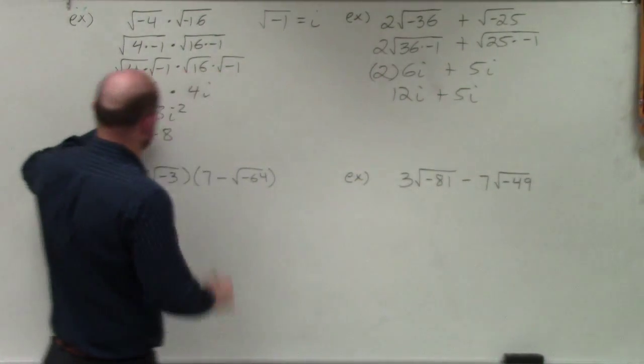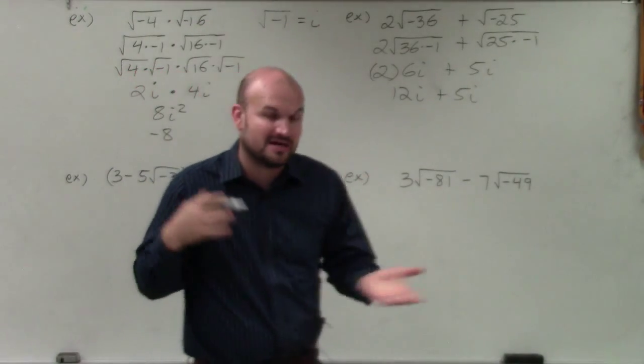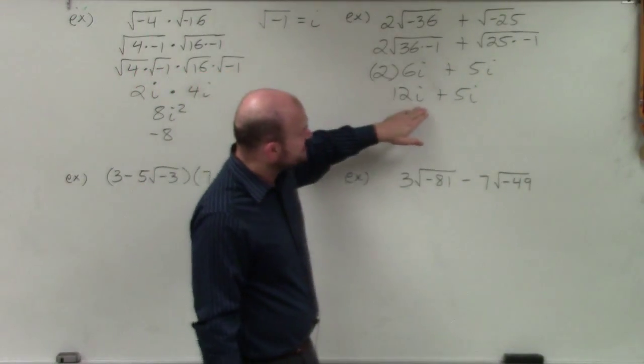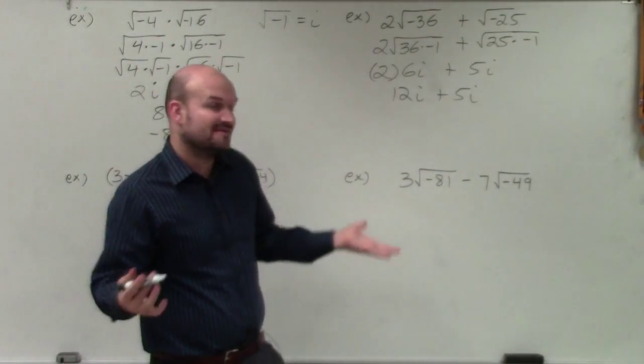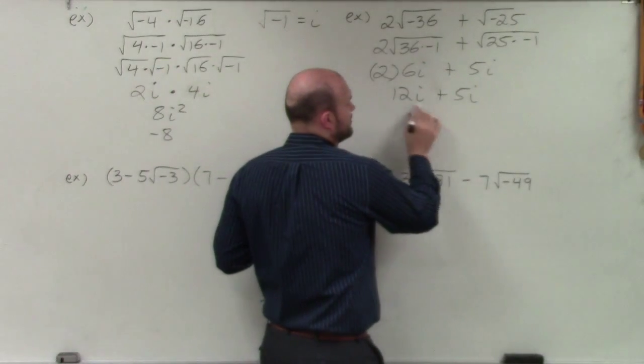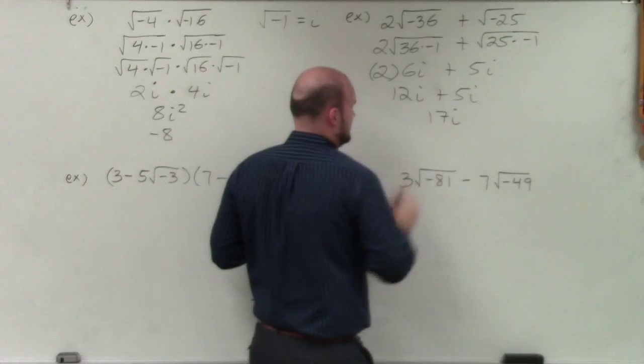When you're multiplying, you can only multiply the real times the real and the imaginary times the imaginary. But in this case, when you're adding, we treat this just like variables. 12x plus 5x is going to be 17x. Or in this case, when we have i, we're going to keep that the same, so it's going to be 17i.